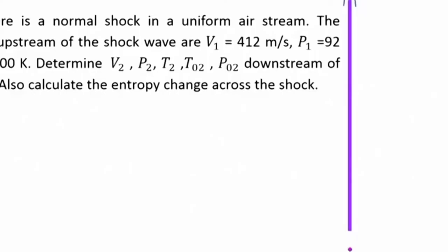The first example: there is a normal shock in a uniform air stream. The properties upstream of the shock wave are V1 equals 412 meter per second, P1 is 92 kilo Pascal, T1 is 300 Kelvin. Then determine properties downstream of the shock: V2, P2, T2, T02, P02. Also calculate the entropy change across the shock.